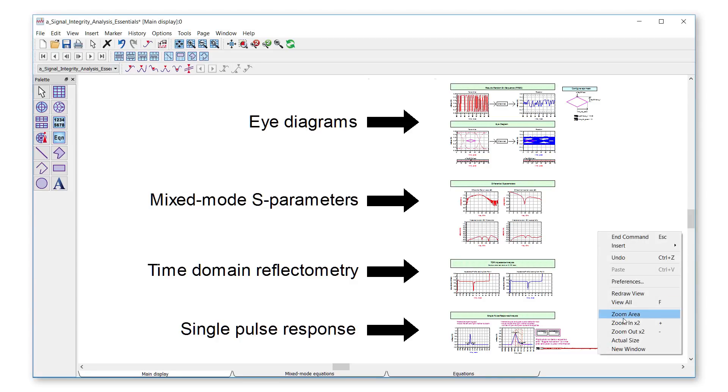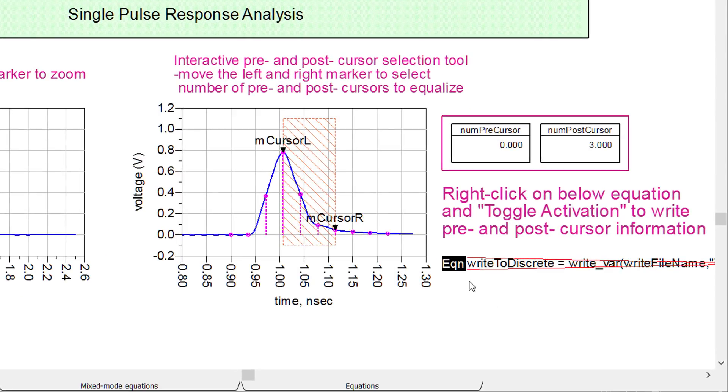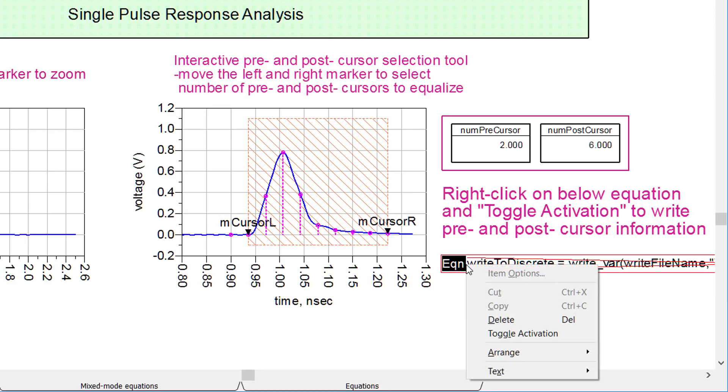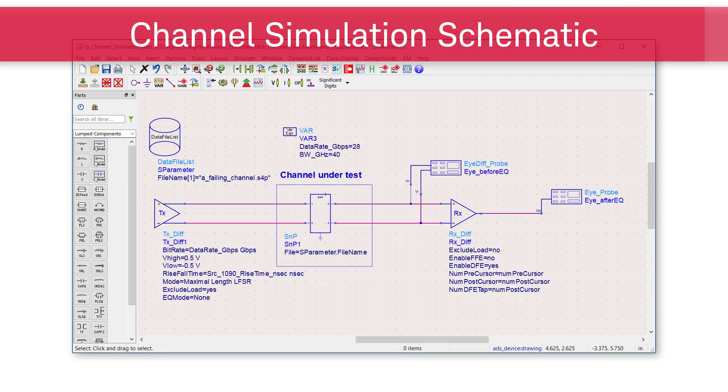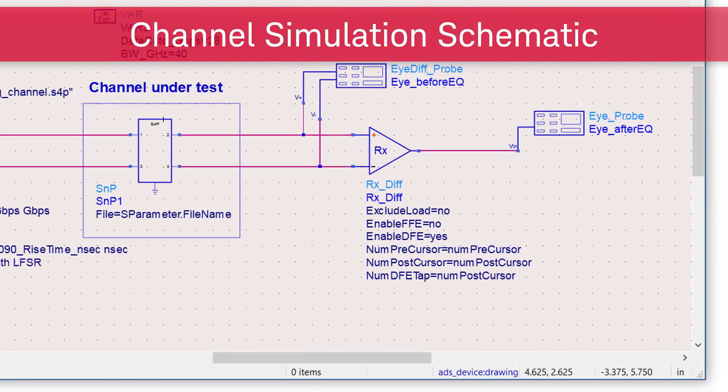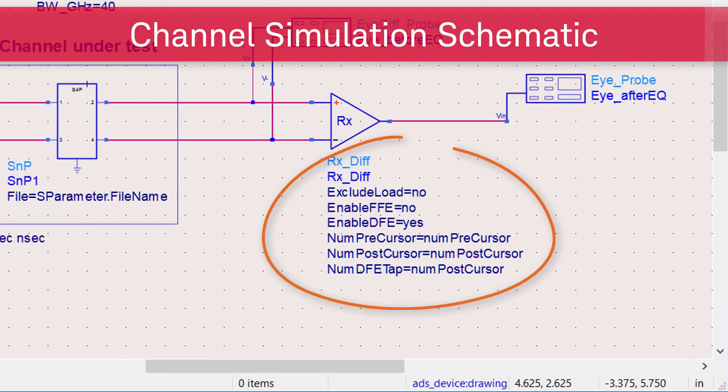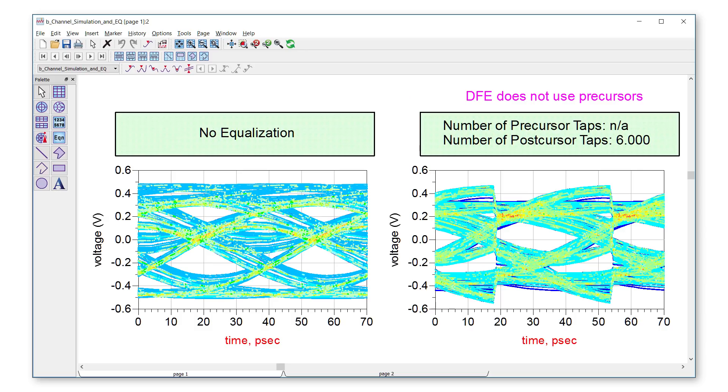By using the interactive cursor selection tool, we can select the number of pre- or post-cursors we want to equalize. We then toggle the write function to create a cursor definition file. We will then apply equalization in the channel simulation. Enabling decision feedback equalization and entering the cursor definition files, we will open our closed eye. From the simulation result, we can see that the eye was initially closed because of the via stub resonance. After applying equalization, the eye opens.